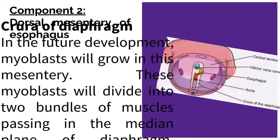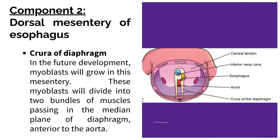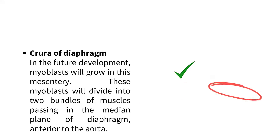What are the crura of the diaphragm? In future development, myoblasts will grow into this mesenteria. These myoblasts will divide into two bundles of muscles passing in the median plane of the diaphragm, anterior to the aorta. These are called the crura of the diaphragm.